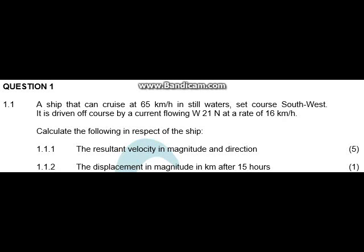A ship can cruise at 60 to 65 kilometers per hour in still water. It is set to coast southwest, but is driven off by a current flowing west 21 degrees north at a rate of 16 kilometers per hour. The question asks us to calculate the resultant velocity in magnitude and direction, and I'll also show how to calculate the relative velocity.